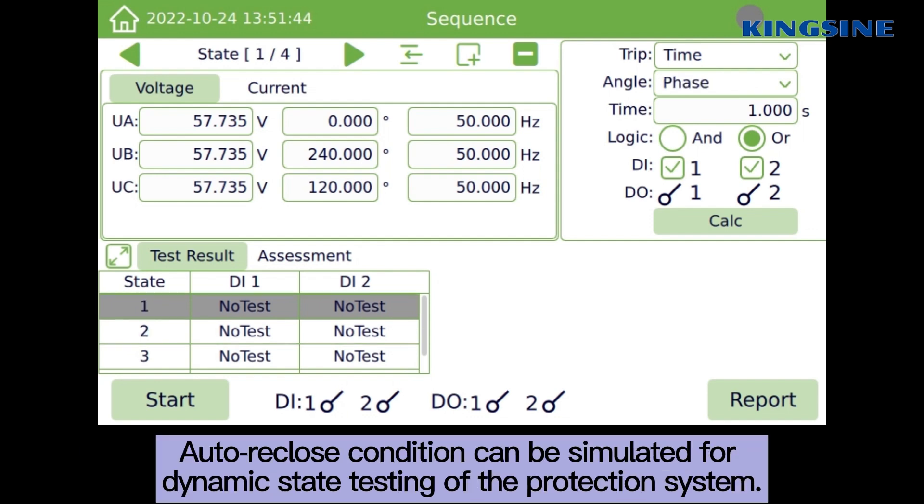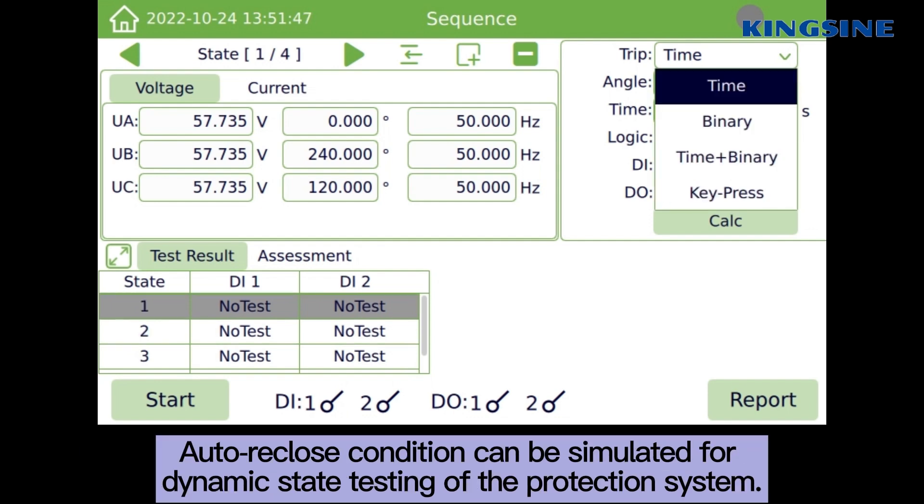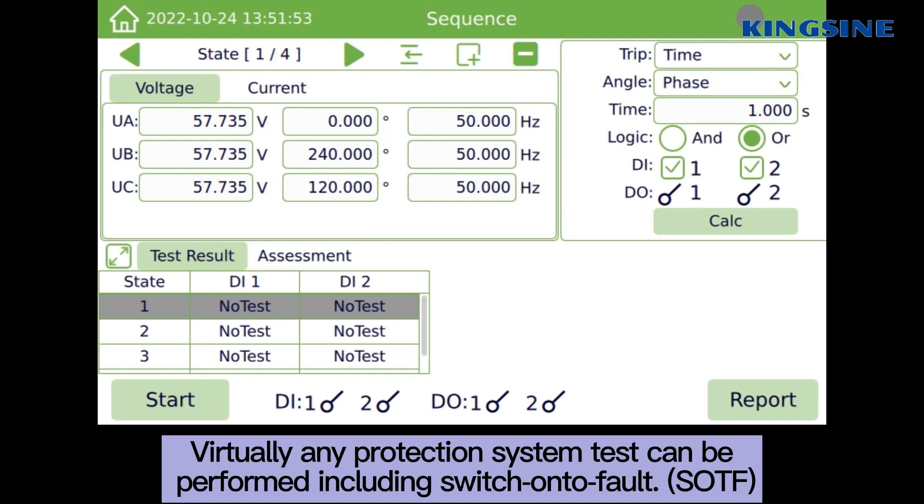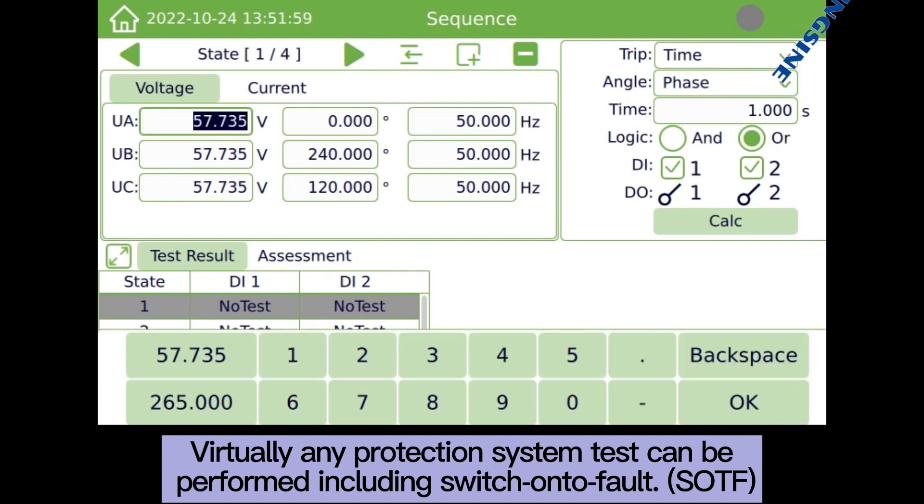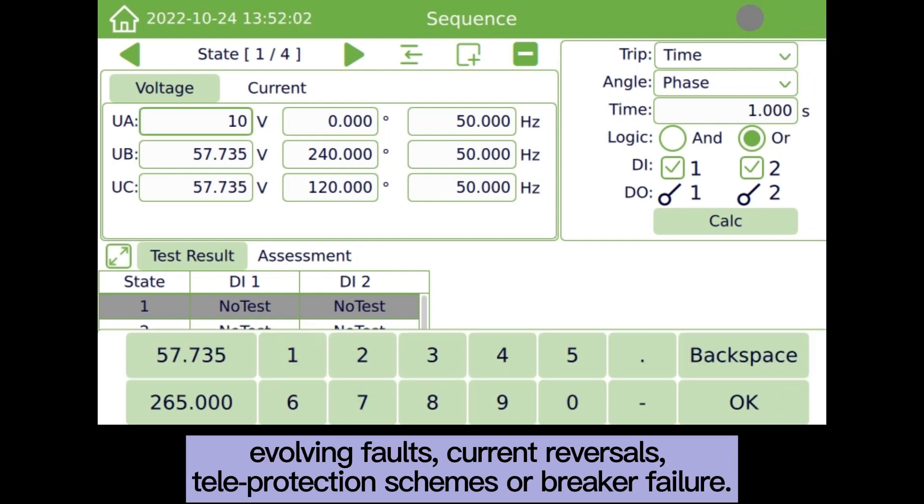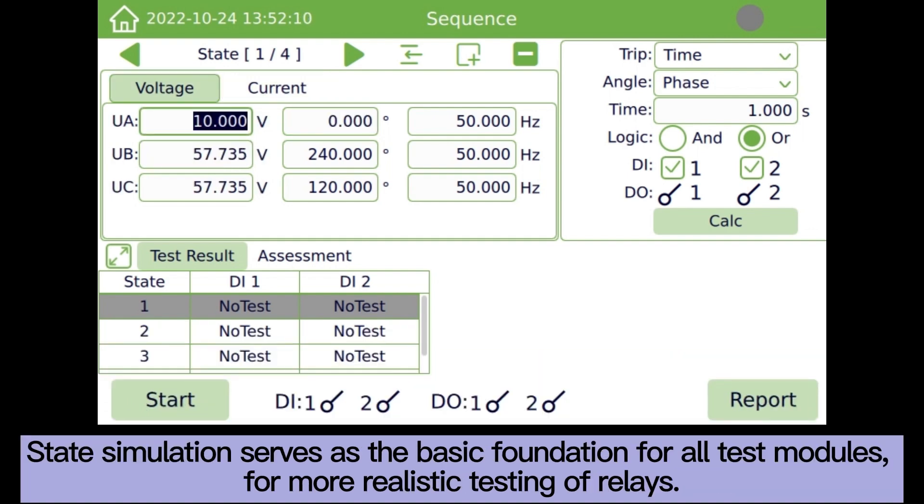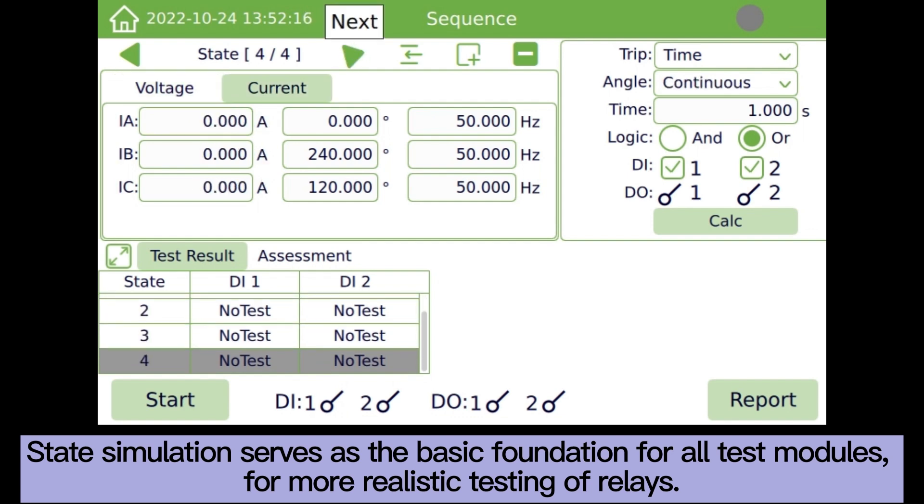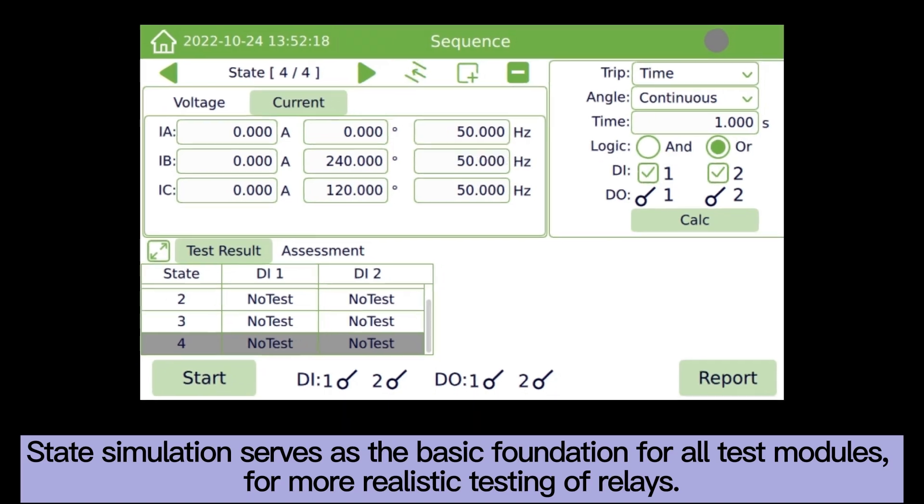Auto-reclose condition can be simulated for dynamic state testing of the protection system. Virtually any protection system test can be performed including switch-on to fault, evolving faults, current reversals, tele-protection schemes, or breaker failure. State simulation serves as the basic foundation for all test modules for more realistic testing of relays.